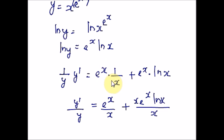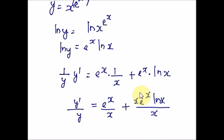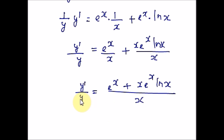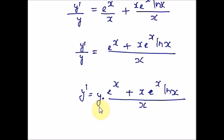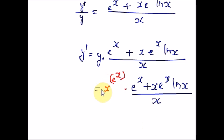e raised to x times 1 is e raised to x, keeping denominator x as such. For the other term, multiplying numerator and denominator by x gives x times e raised to x times ln of x in the numerator and x in the denominator. The denominators are now the same, so I take that as common and write the numerators with a plus sign in between. Now multiply both sides by y, and back-substitute the value for y — replacing y with x raised to e raised to x.